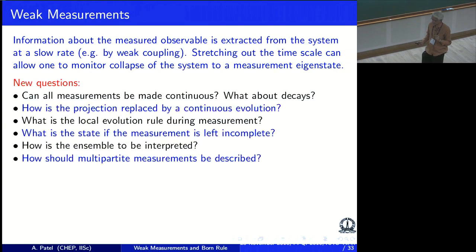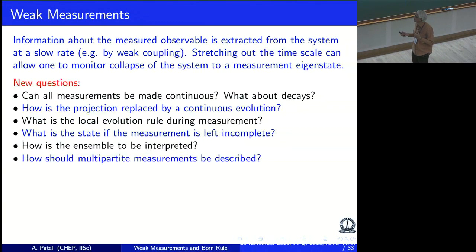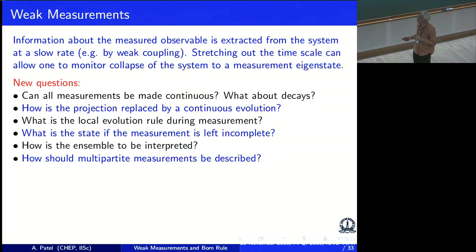But it does raise lots of new questions which are not in the axiomatic framework of quantum mechanics. Can all measurements be made continuous? How are you going to replace the projection by a continuous substitute? What is a local evolution rule during measurement? What happens if I don't complete the measurement and stop halfway — what will I get? If I restart at the middle, does the result depend on the middle point or the original point? Where is the ensemble? And if I do multipartite measurements on different parts, how will all these different trajectories come together?